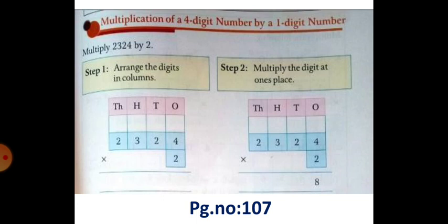Next, Step 2: Multiply the digit at ones place. So the ones place numbers are 4 into 2. 4 twos are 8. So 8 you have to write in ones place.